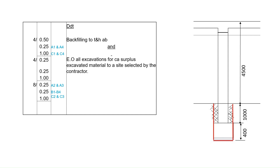Now let's tackle the last item on our measuring list: the backfilling. In the first video we measured excavations and backfilling to the holes, and mentioned that when moving on to items like the bases, blinding, and columns we would deduct the backfilling from the volume of those items. In the previous video we deducted backfilling from the blinding and column bases. Now we are specifically deducting the backfilling to the columns. We will use the same column measurements but not for the full height — instead we measure from the top of the base to ground level, which is 1000 millimeters deep.